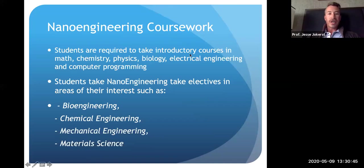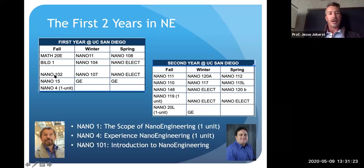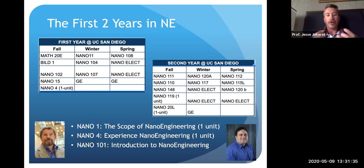In the first year at UCSD, you'll take introductory courses in chemistry, physics, and math — a lot of this will transfer — along with bioengineering, chemical engineering, mechanical engineering, and materials science electives. Core courses include Nano 102, the chemical principles of nanoengineering — I've taught that, and Andrea Tao tends to teach it now. Nano 4 is a great class: your first lab-based course, where right off the bat you're making nanoparticles in the lab.